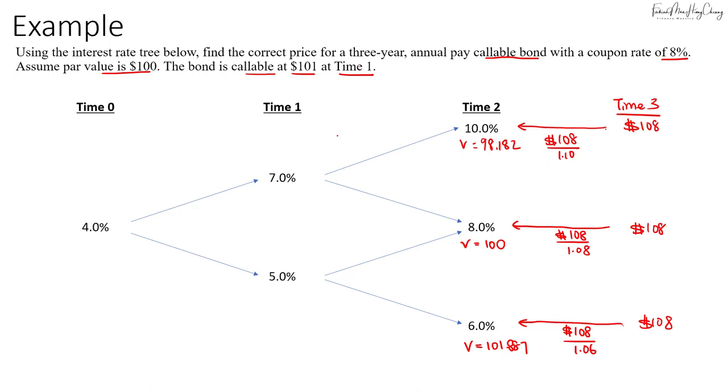The bond cannot be called yet, so we'll proceed to discount it back to time 1. Don't forget we have the coupons here—$8, $8. When you discount, remember the probability is 50% for each node. When I calculate the value of the bond at time 1, I'll take 0.5 multiply by these two values: 98.182 plus 100 plus the coupon of $8, then we discount it at 7%. That gives us a value of 100.85.